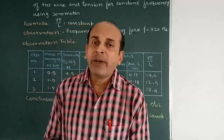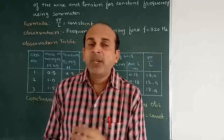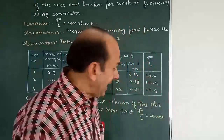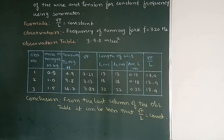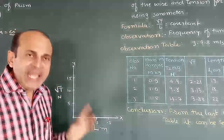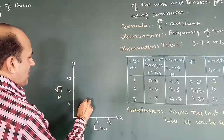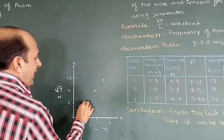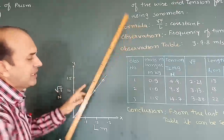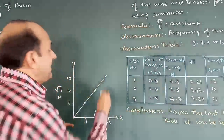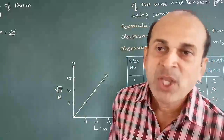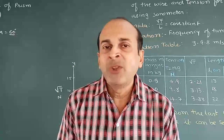Students, please note down all these readings in your journal and complete this experiment. We also have to plot a graph of √T versus L, where √T will be on the y-axis and L will be on the x-axis. When you plot this graph, as T increases the graph also increases, giving a straight line passing through the origin. This indicates that √T / L is equal to constant.